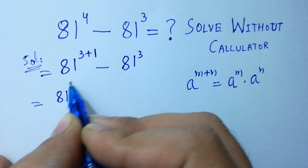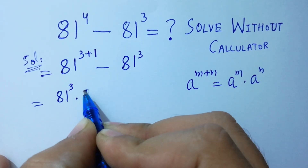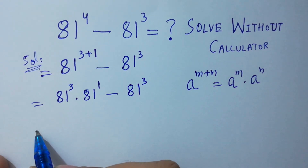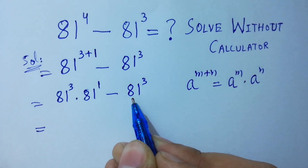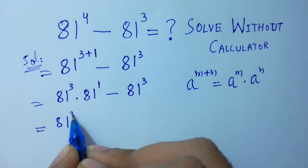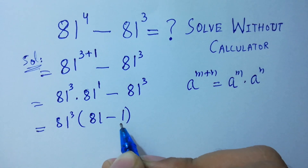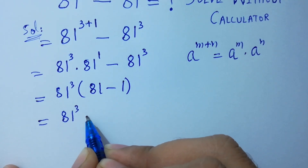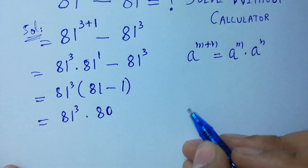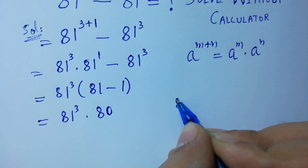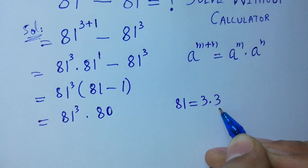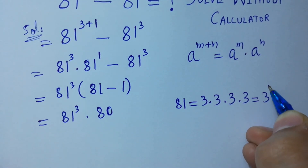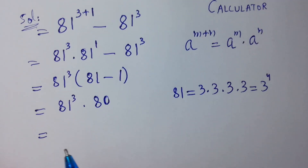So we have 81 cubed times 81 to the power 1, minus 81 cubed. Next, 81 cubed is common, so we factor it out: 81 cubed times (81 minus 1). 81 minus 1 equals 80. And as we know, 81 equals 3 times 3 is 9, times 3 is 27, times 3 is 81, which means 81 equals 3 to the power 4.